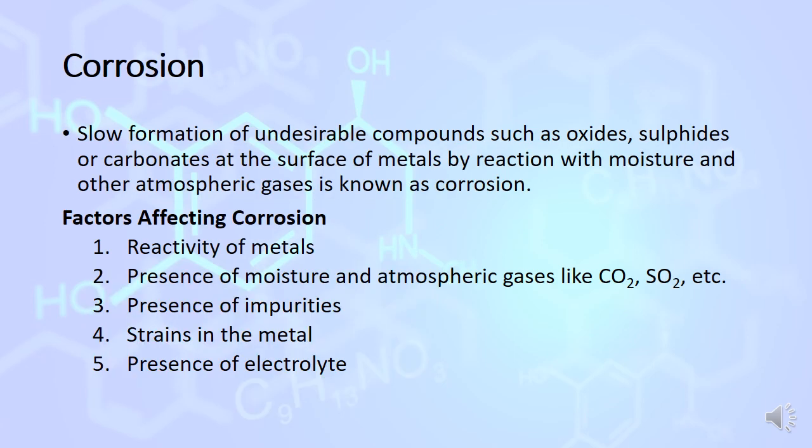Corrosion is a slow process. During this process, deterioration of matter takes place or undesirable compounds such as oxide, sulfide, or carbonate form at the surface of metal by reaction with moisture and other atmospheric gases.